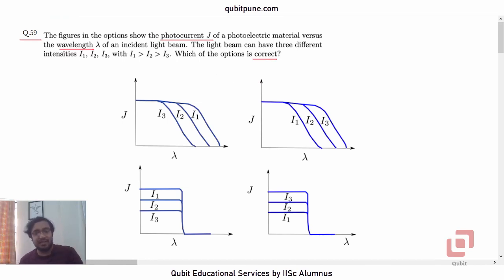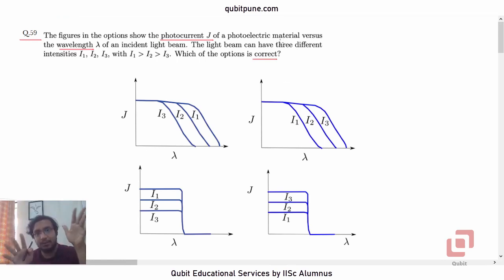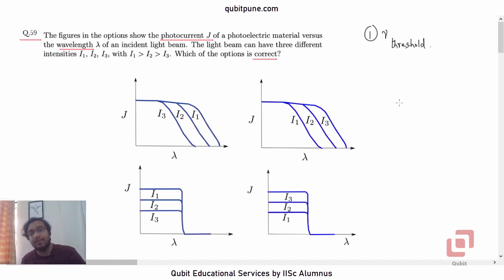Any specific given photoelectric material is going to have a threshold frequency. It is going to have a minimum threshold frequency, and this threshold is independent of intensity. In fact, that is where the classical theory and the quantum theory of light differ.